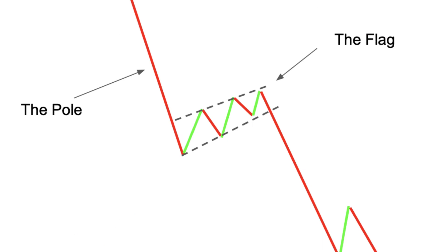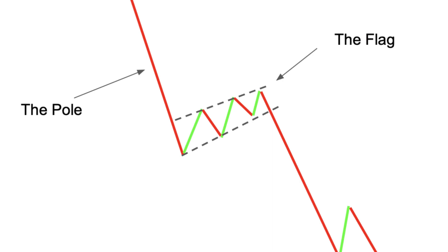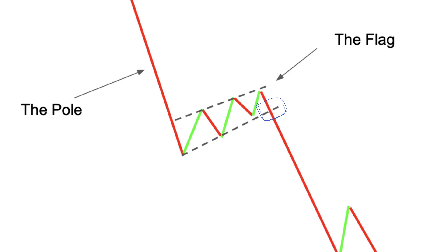Now let's move on to the next pattern — the bearish flag pattern. In this pattern we see a bearish movement that we refer to as a pole. After this move we can see a series of higher highs and higher lows. When the price reaches the support for the third time, we can see a bearish move on the chart.